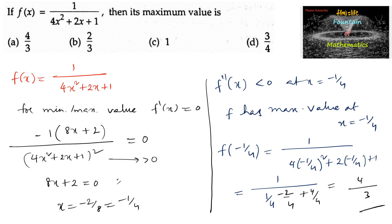So 4 by 3 is the maximum value. The maximum value for this function is 4 upon 3. Note that f″(x) is negative because of the negative of 8x plus 2 in the numerator, so f double dash of x is less than 0 at x equal to minus 1 by 4. Thank you.